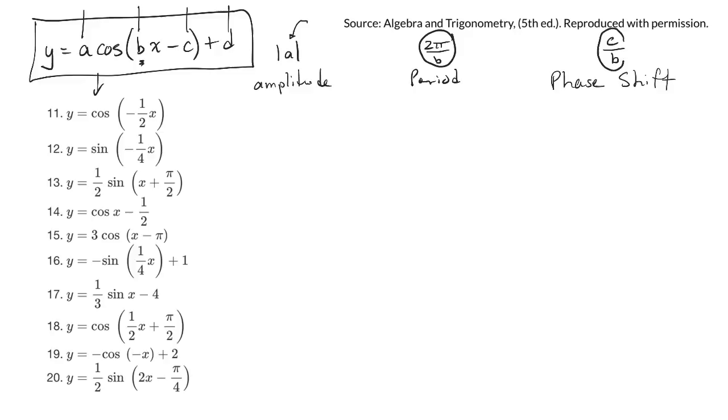And to get the phase shift, you take C and divide it by B. And that'll tell you the phase shift. Amplitude, again, is from a midline, how high up the graph goes, or how low it goes.